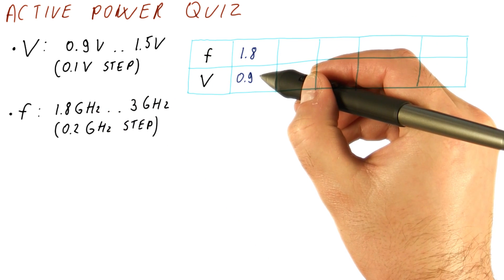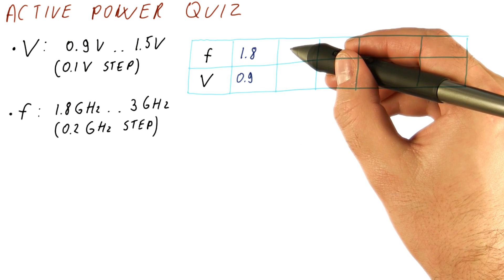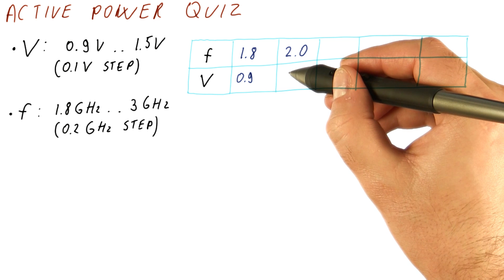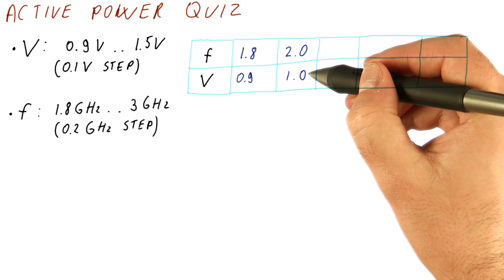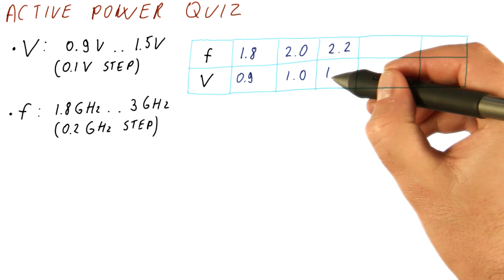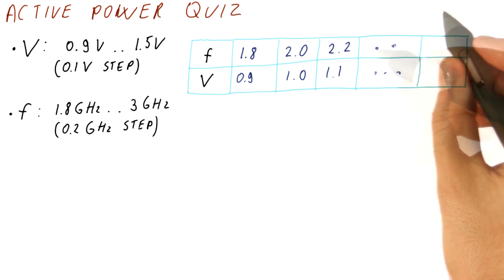our voltage can be 0.9 volts. If we want to use the next frequency setting of 2.0 gigahertz, then the voltage needs to be 1.0 volts. For 2.2 gigahertz, we need to use 1.1 volts, and so on.